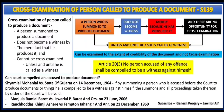Section 139 discusses cross-examination of a person called to produce a document. The bare provision says: a person summoned to produce a document does not become a witness by the mere fact that he produces it, and cannot be cross-examined unless and until he is called as a witness. A person summoned by the court to produce a document will not become a witness just because he is producing the document, and therefore there is no opportunity for cross-examination.